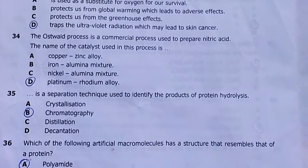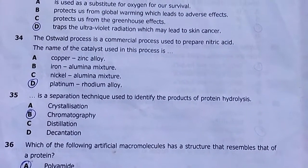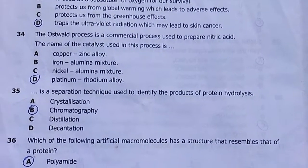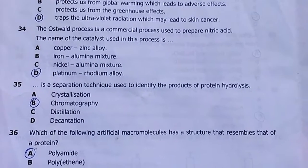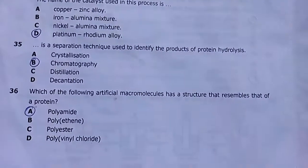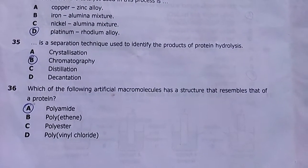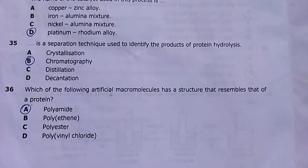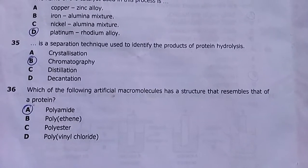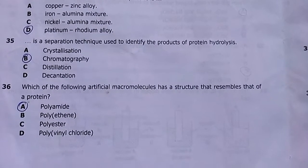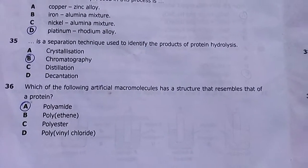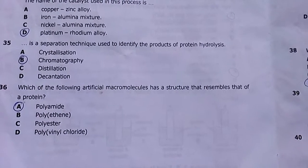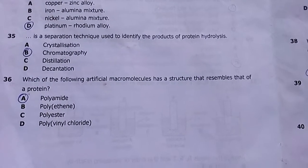Number thirty-five: chromatography is the separation technique used to identify the products of protein hydrolysis. Number thirty-six: which artificial macromolecule has a structure resembling that of a protein? Polyamides — proteins are bound by amide linkages and so are polyamides.